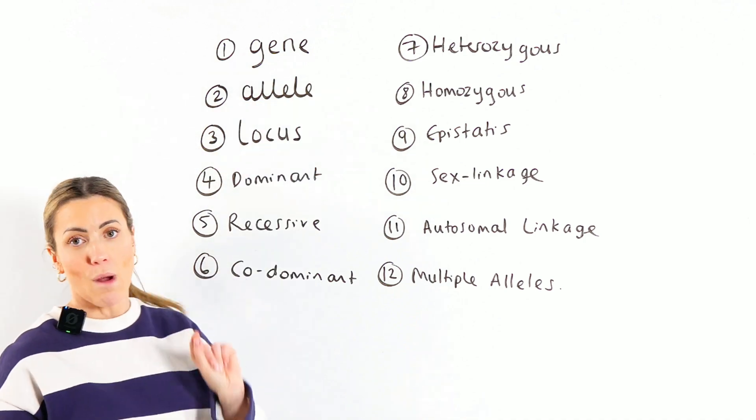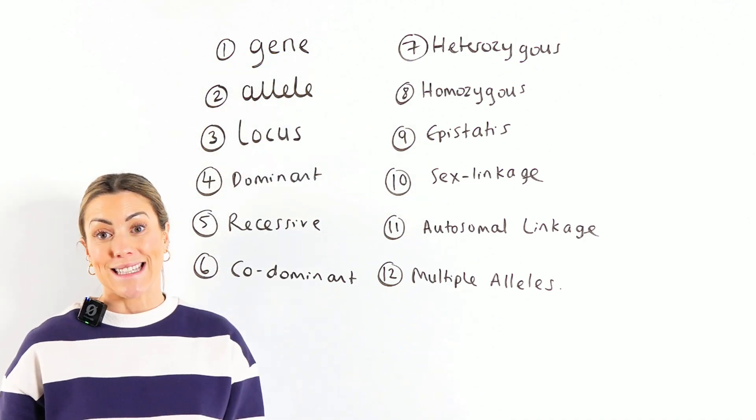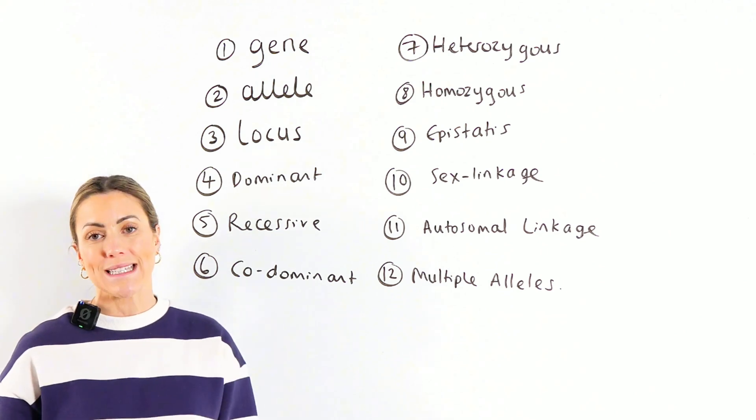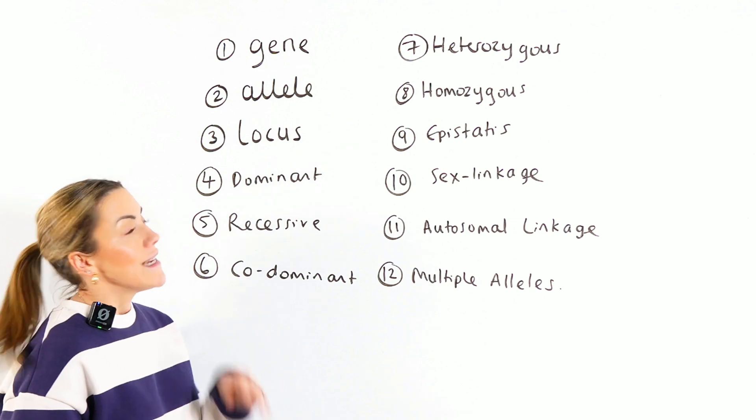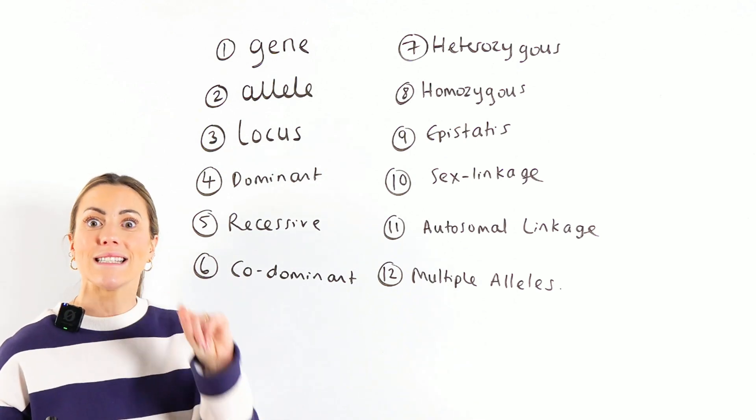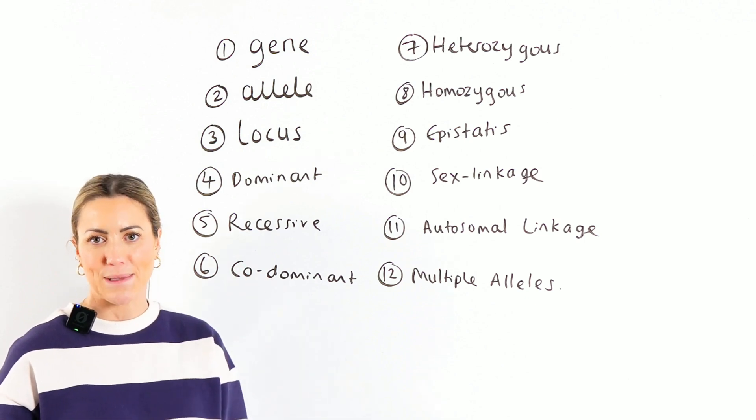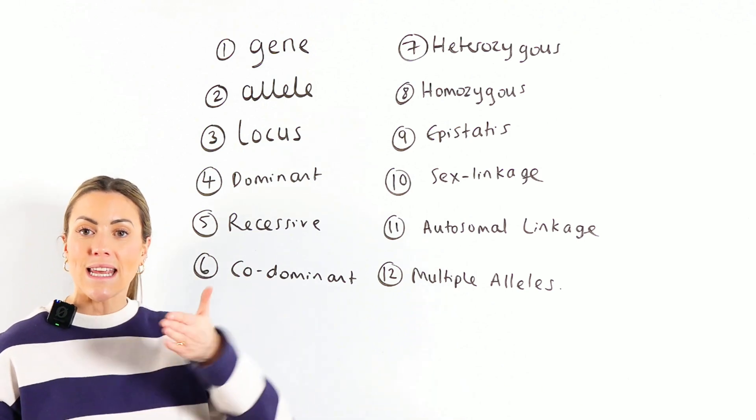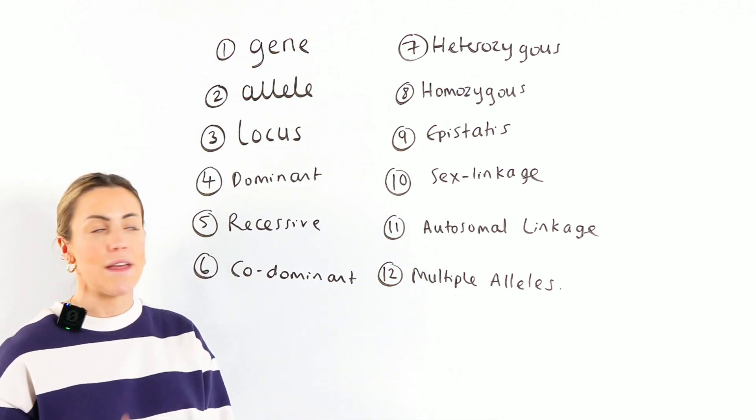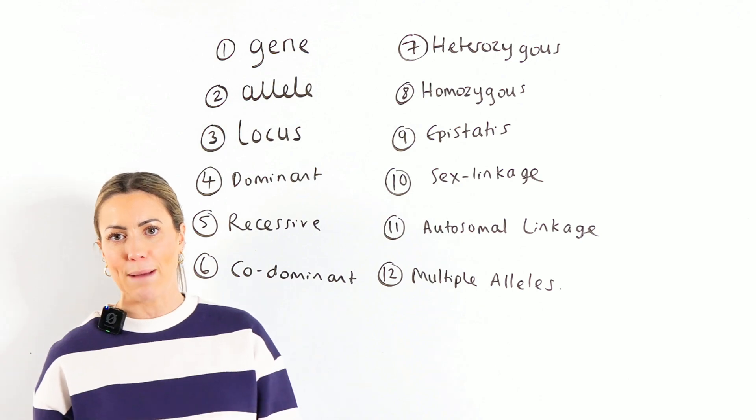Okay, so the first one we've got, what is a gene? You learned this one at GCSE, but at A level, we should be saying that a gene is a section of DNA with a particular sequence of bases that codes for a polypeptide. Remember, it's the sequence of bases in the gene that determines the order or the primary structure of the polypeptide.